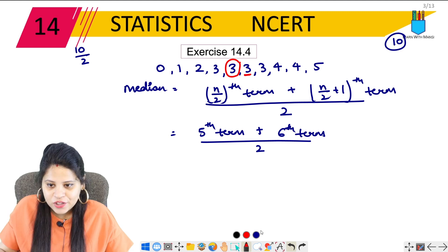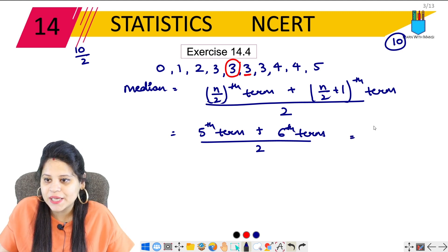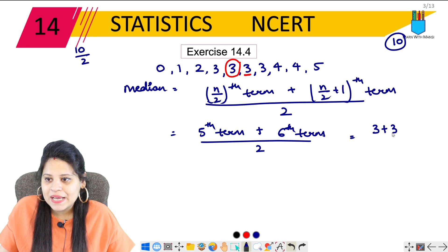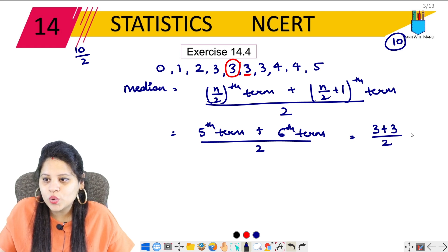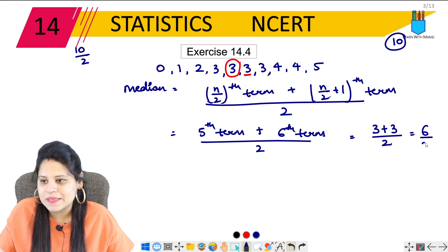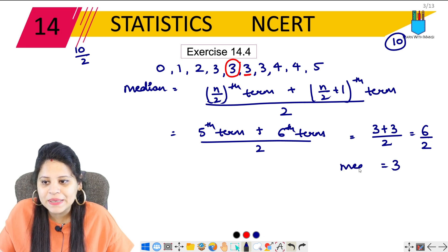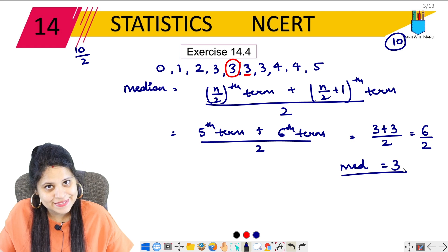So 5th term is 3, 6th term is 3. So this is 3 plus 3 upon 2. 3 plus 3 is 6, 6 upon 2 is 3. So therefore, our median is 3.